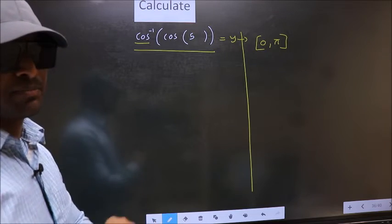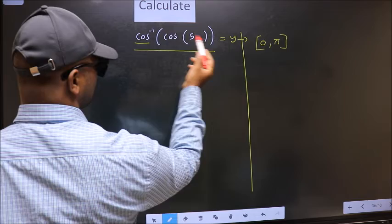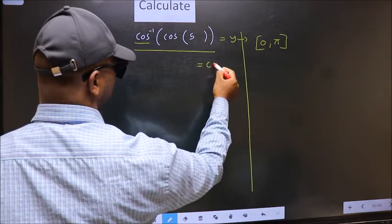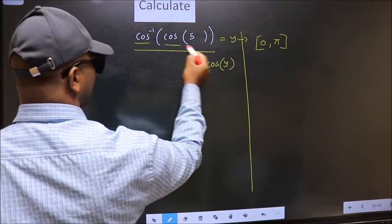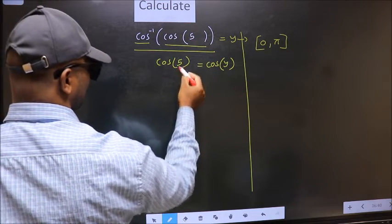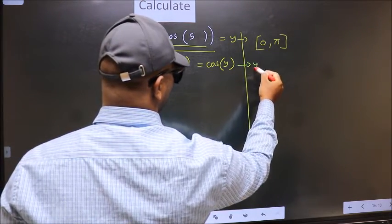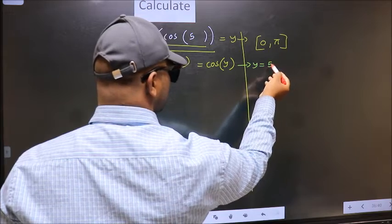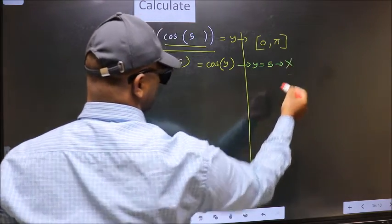Clear with this point? Next. Shift cos inverse to the other side. It will become cos y and this no change. Now comparing both sides we get y to be 5. Does this lie in this interval? No. So reject this answer.